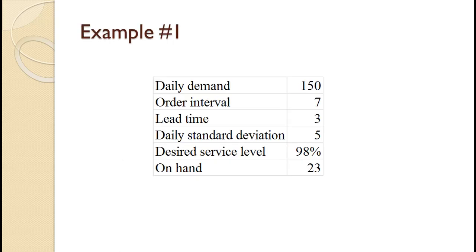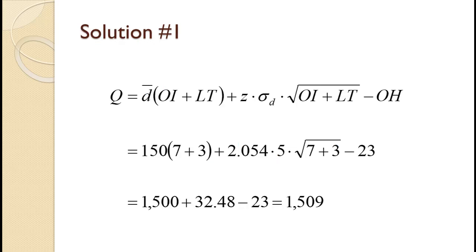In this first example, a company orders an item every week. Once ordered, it takes three days to arrive. Average daily demand is 150 with a daily standard deviation of 5. They desire a 98% service level and currently have 23 on hand. The protection period is 7 plus 3 equals 10. Average daily demand of 150 times the protection period of 10 equals 1,500. A 98% service level generates a Z value of 2.054. That times the daily standard deviation of 5 times the square root of 10 gives safety stock of 32.48. Combining these two values and subtracting the on-hand level of 23 gives an order quantity of 1,509. Since you cannot order partial units, this number is rounded to a whole number.